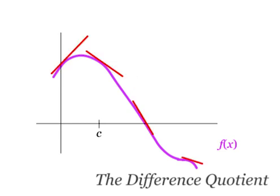Now, a function can have all sorts of different derivatives, because as you progress along a function, you can have all sorts of different tangent lines.